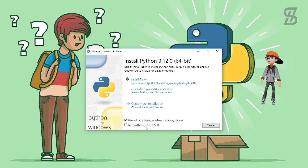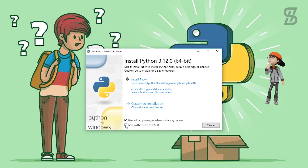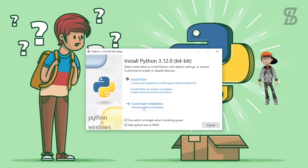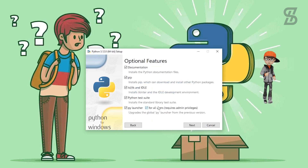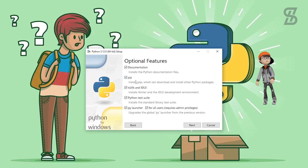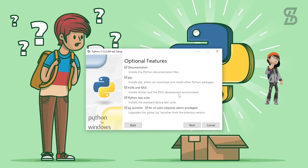Once you double click on it, it will open this installation wizard where you need to click on the checkbox which is going to create a path in our environment variable PATH. Make sure that this option is checked, otherwise it cannot be installed properly. After that, to install pip, click on Customize Installation, and it will show you all the optional features including pip, which helps download and install other Python packages. Checkmark all of the options and then click Next.